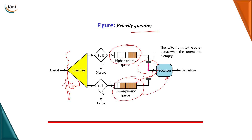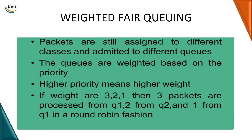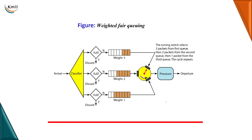But the problem with this approach is if the high priority packets keep coming in, the low priority packets will have to wait forever — that is, they have to experience starvation. So to avoid this problem, we go with the third technique, which is weighted fair queuing.